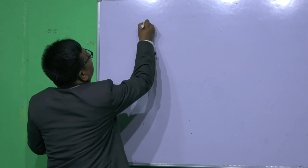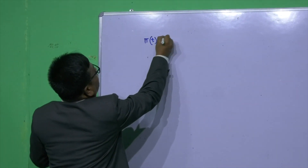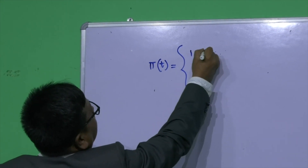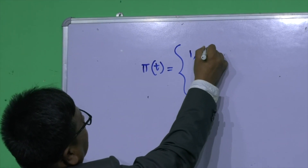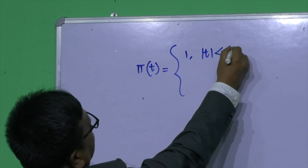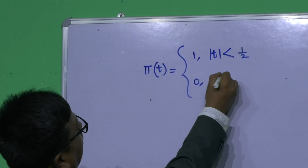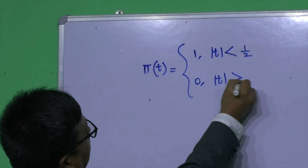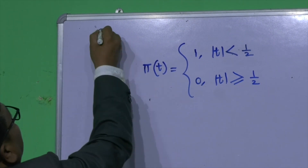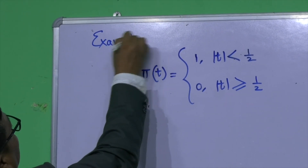The example is the so-called rect function. I'm just writing out what the rect function is. This is a function of the form π(t), which equals 1 when |t| is less than one-half, and equals 0 when |t| is greater than or equal to one-half. This function is the so-called rect function or rectangular function.